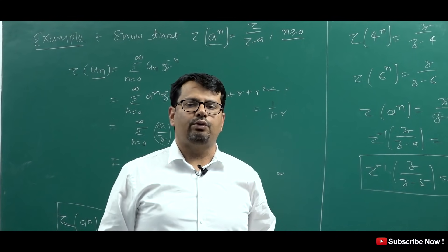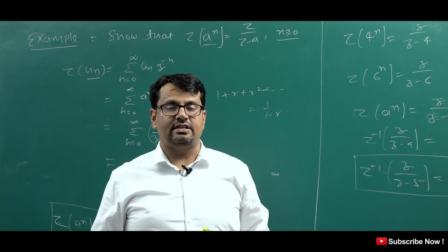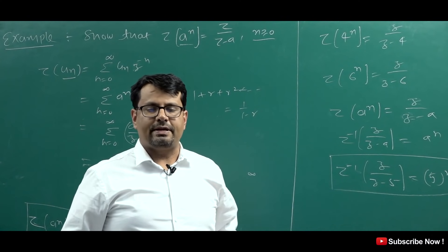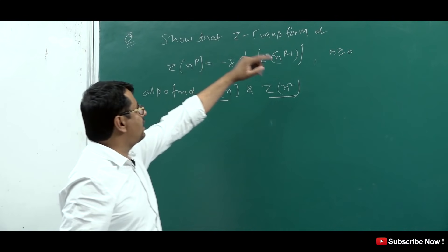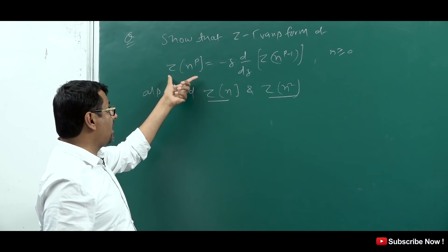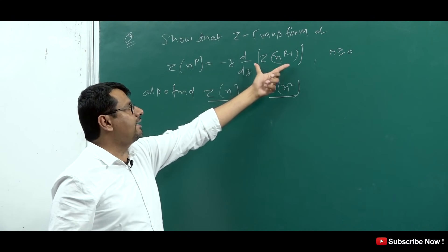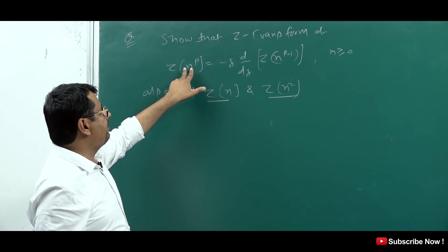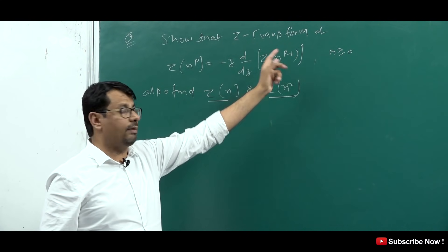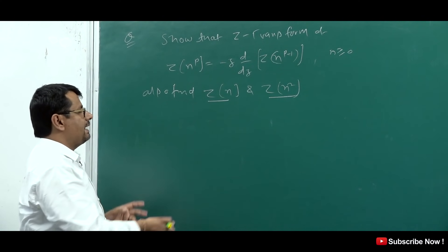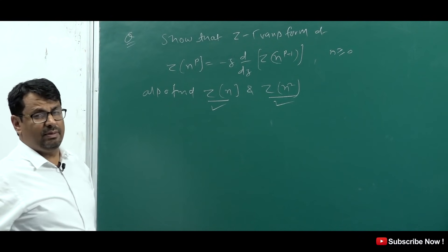In the next video I will tell you in detail how to find the inverse Z-Transform. Now we will do some more questions. Here is a question: show that the Z-Transform of n^p is equal to minus Z times d/dz of [Z-Transform of n^(p-1)]. We have to prove this. With this property, we can find Z-Transforms very easily, and these types of questions are frequently asked in exams.